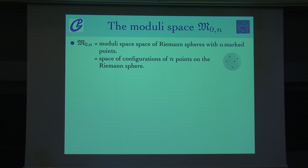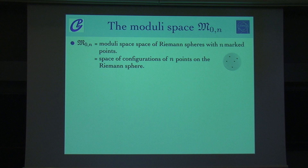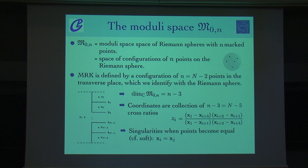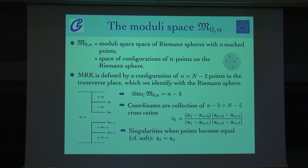The moduli space M_{0,n} is the moduli space of Riemann spheres with n marked points — the moduli space of configurations of points on a Riemann sphere. In Marcus's talk there was GR(4,n); this is CP^1. In other words, it is all possible ways of putting points on the sphere. The connection to multi-Regge kinematics is that decompactifying the sphere gives the transverse plane. In multi-Regge kinematics we have a transverse plane with dual coordinates on it. So the kinematics corresponds to putting n-2 points on the plane, or equivalently on the sphere, with two incoming partons fixed.